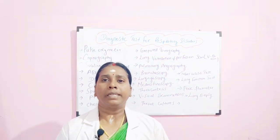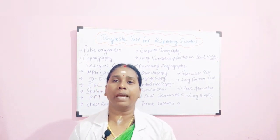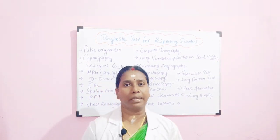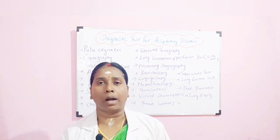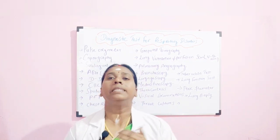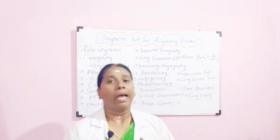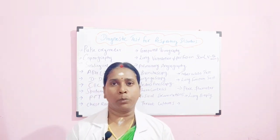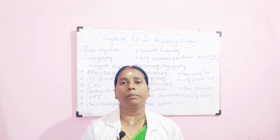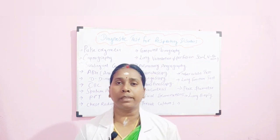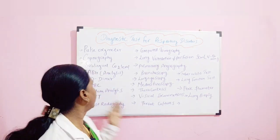Then we have the D-dimer test. The D-dimer test is used to analyze thrombin and plasmin activity in the blood. It is used to rule out DIC — disseminated intravascular coagulopathy — and pulmonary embolism. These types of coagulation disorders can be analyzed using the D-dimer test.